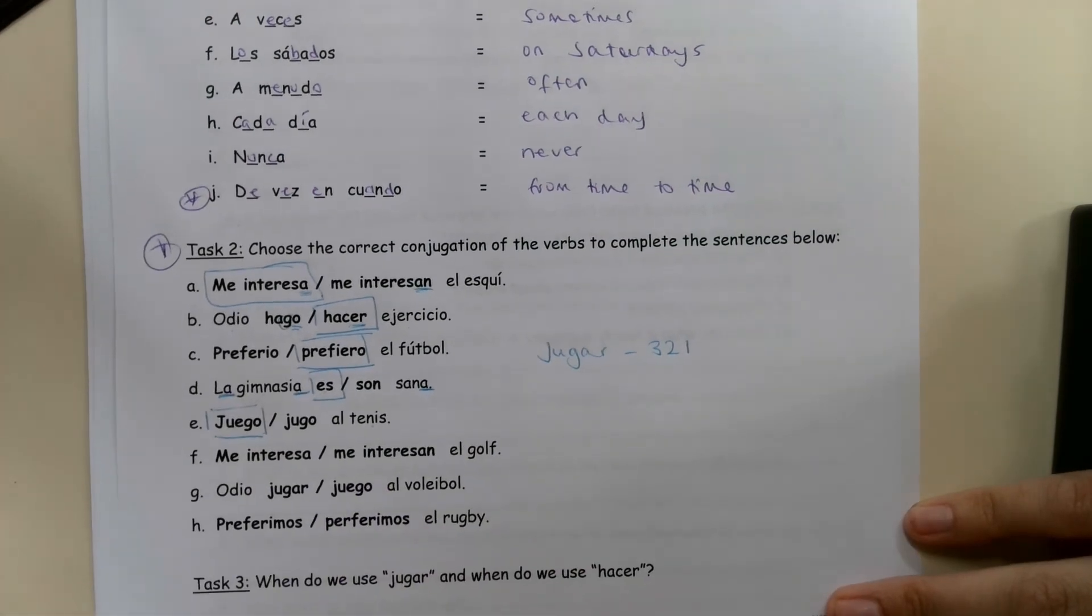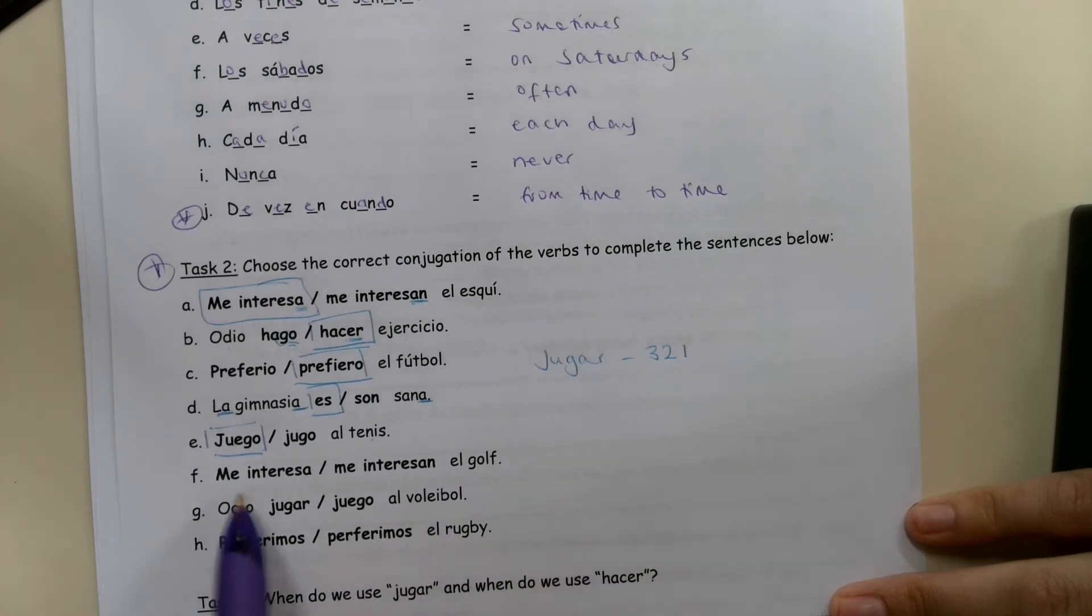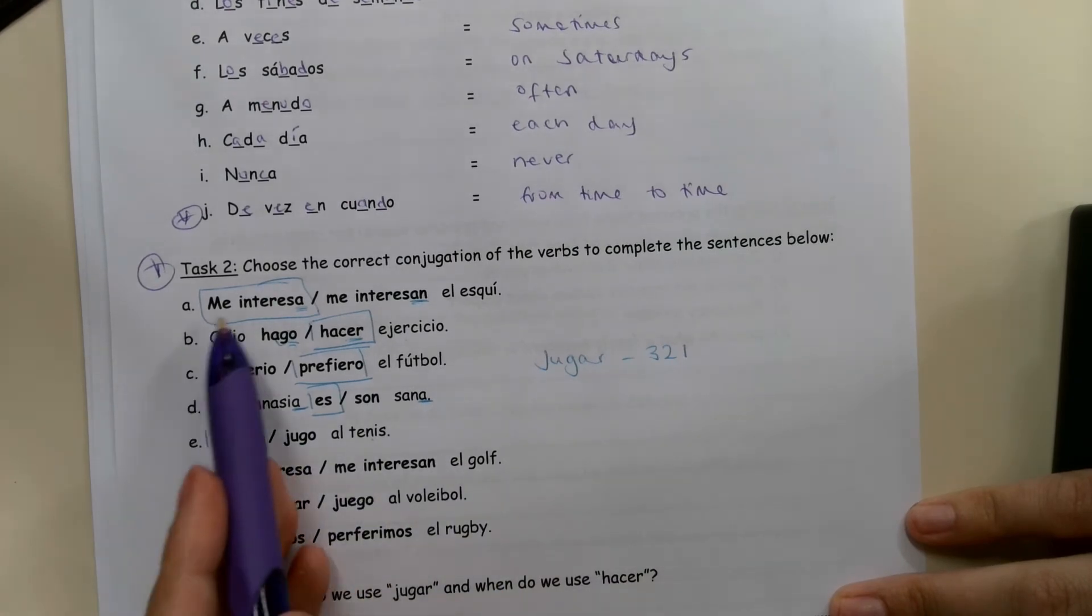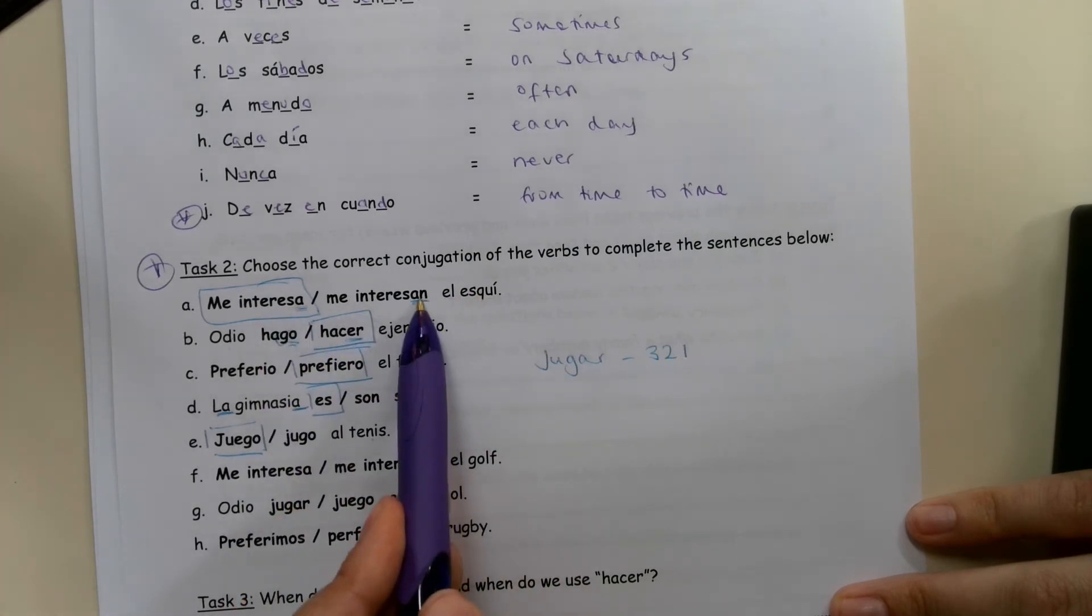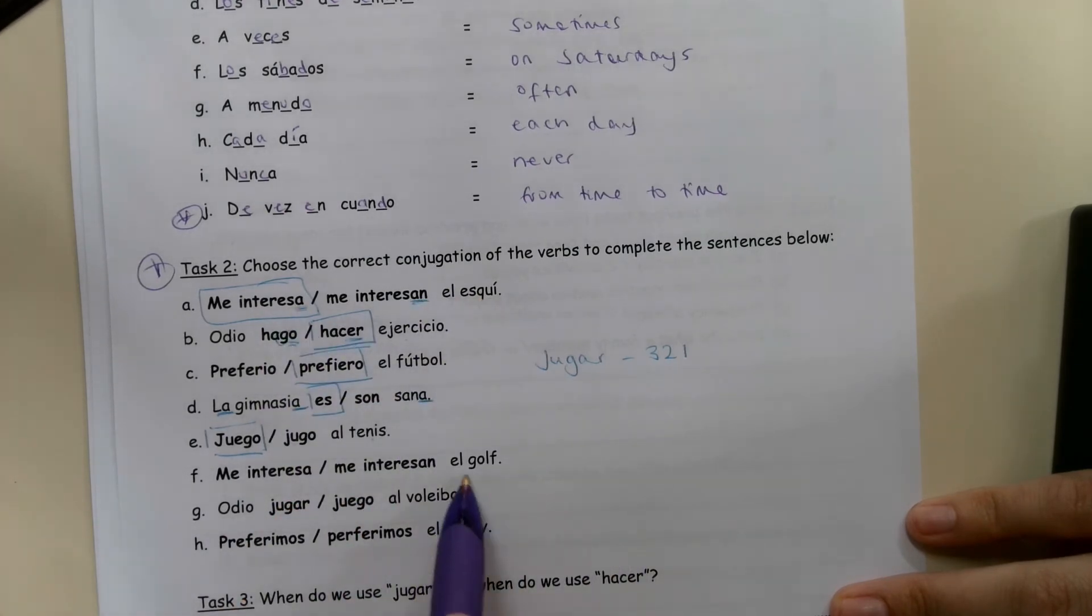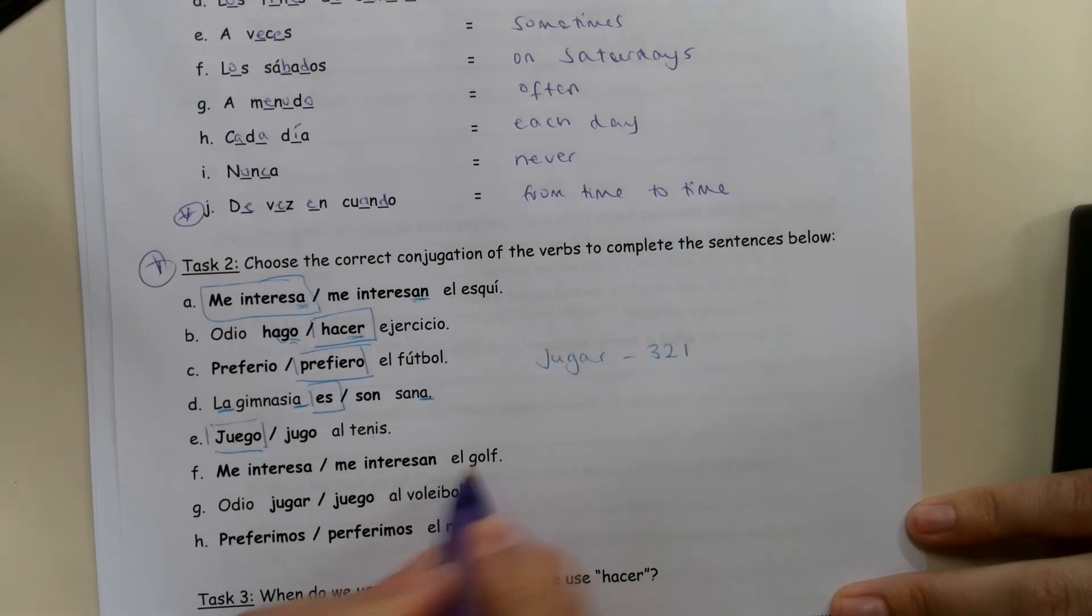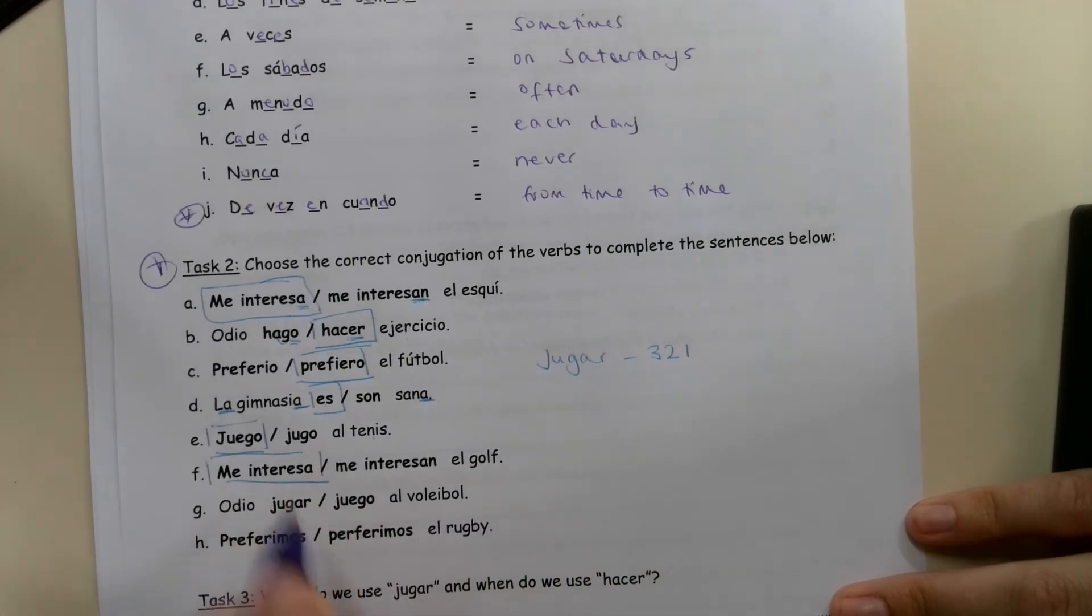Me interesa or me interesan el golf. So we have something very similar here in A. We know that if it's talking about one thing, we need the A. More than one thing, we need the N as well. We're looking at el golf. That's one thing. So we're going to choose me interesa again.